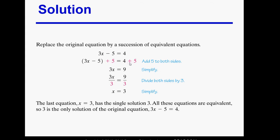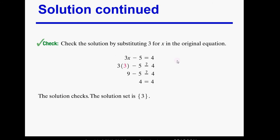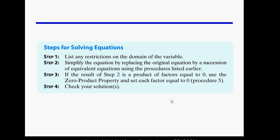Adding 5 to both sides gives us 3x = 9. Then we divide both sides by 3 to get rid of the coefficient of x — 'coefficient' means the thing multiplied by x. We get x = 3 by itself. We can verify: 3 times 3 is 9, and 9 minus 5 is 4, which is true. We write the solution set with braces.